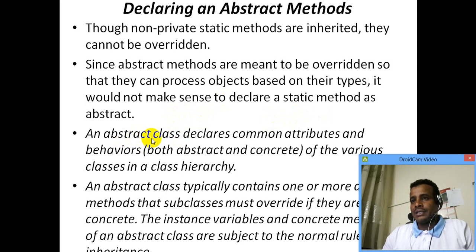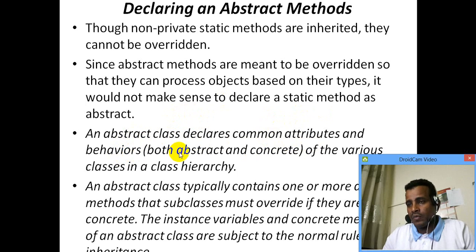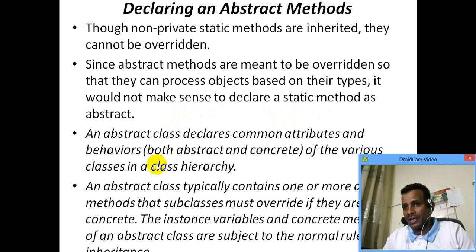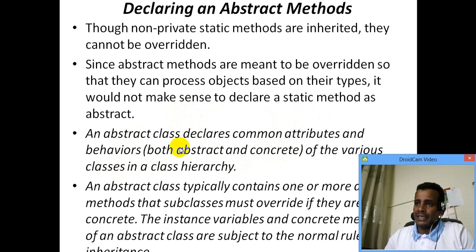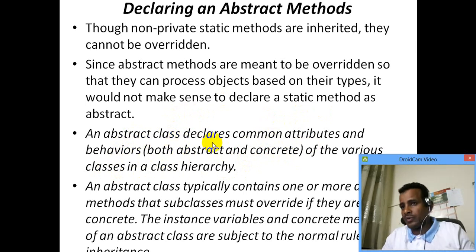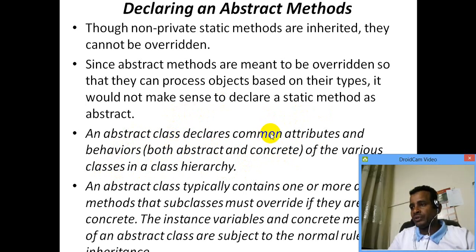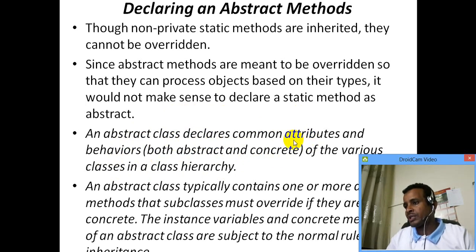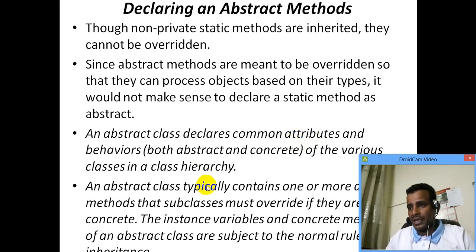Abstract class declares common attributes and behaviors, both abstract and concrete, for the various classes. We can do it with common attributes. We can calculate the grade. The next step is under-graded or post-graded — we can do it with uniformity.